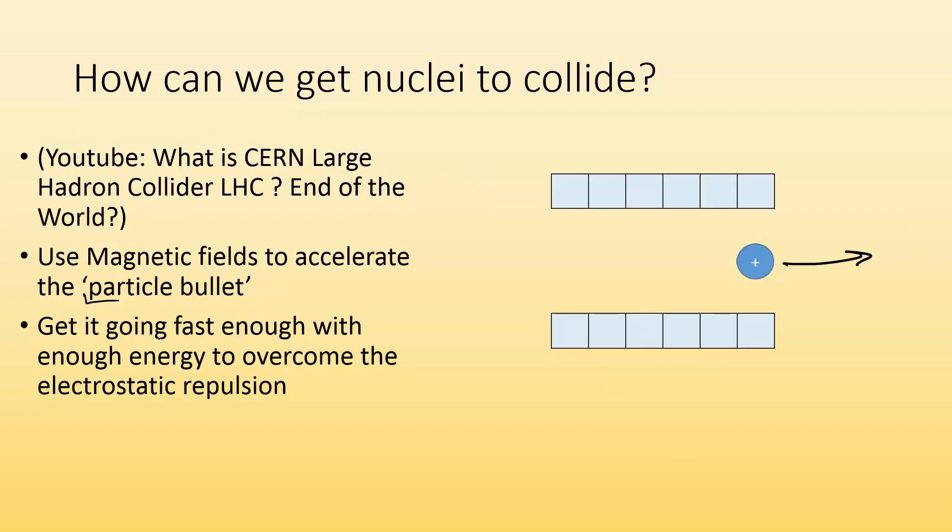We've got to get it going really fast, because if I'm trying to hit a positive nucleus with a positive particle, it's going to want to deflect because like charges repel. So it's got to be going so fast that it overcomes that repulsion and actually collides with the nucleus.